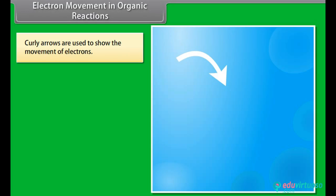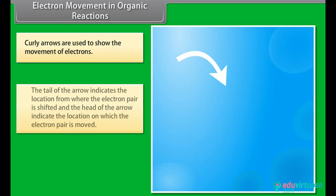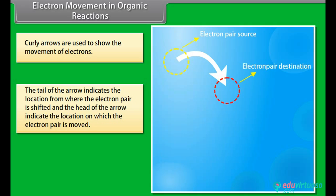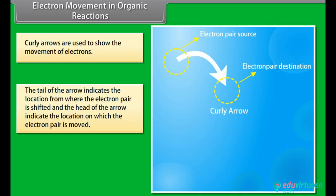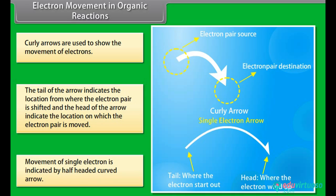Curly arrows are used to show the movement of electrons. The tail of the arrow indicates the location from where the electron pair is shifted, and the head of the arrow indicates the location to which the electron pair is moved. Movement of a single electron is indicated by a half-headed curved arrow.